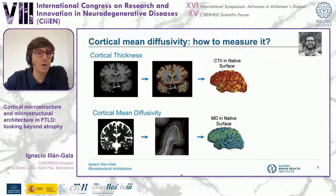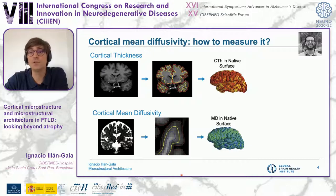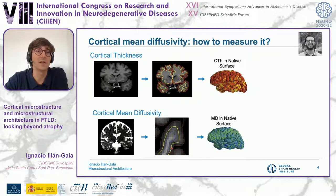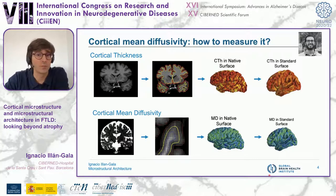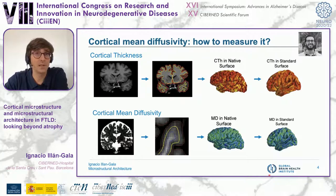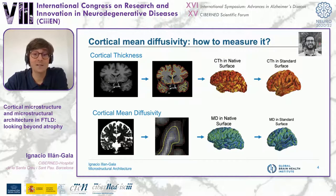Next, we preprocess diffusion-weighted images to obtain the mean diffusivity map, then co-register the DTI diffusion map to the central ribbon of the cortex — represented by the yellow line — so we can study microstructure only at the cortex. For both metrics, we normalize our data to standard space and smooth it using a Gaussian kernel of 15 millimeters before statistical analysis. This method was developed by Victor Montal, a talented neuroscientist in our neuroimaging core.